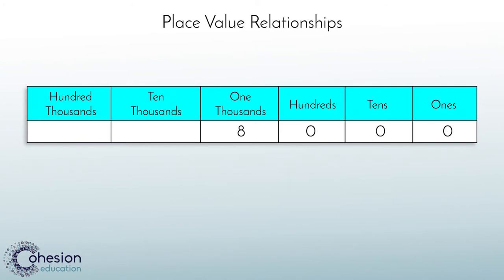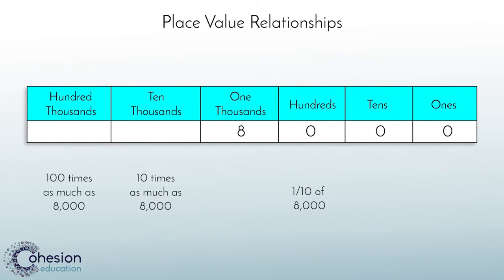The place to the left of eight thousand will be ten times that value, and the place to the right will be one tenth of eight thousand. We can continue to look at this chart and state that the hundred thousands place is one hundred times as much as eight thousand. The tens place is one one-hundredth of eight thousand, and the ones place is one one-thousandth of eight thousand. These rules are true for any number placed onto the place value chart. The number to the left is always ten times greater, and the number to the right is always one tenth of your original number.